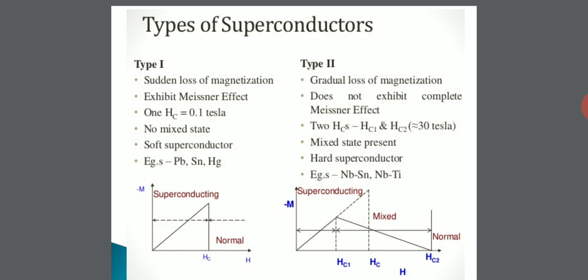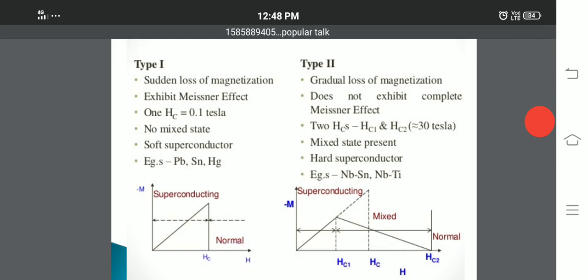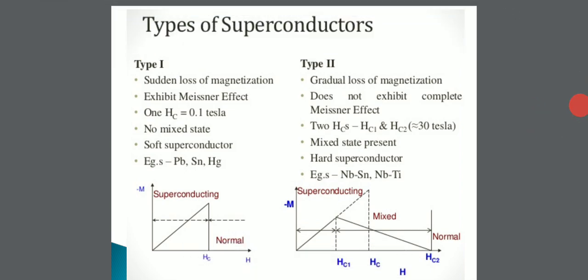To summarize the differences: type 1 superconductors lose their magnetization suddenly, while type 2 superconductors lose it gradually. Type 1 superconductors exhibit the Meissner effect completely, whereas type 2 superconductors do not. The critical magnetic fields are very small in type 1 and very high in type 2 superconductors. Type 1 are called soft superconductors and type 2 are called hard superconductors.